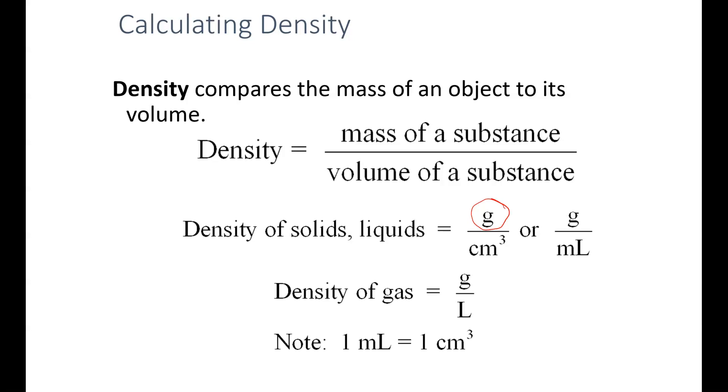The volume of the substance can be measured in cubic centimeters or milliliters if we're talking about a solid or a liquid. For gases, we typically use a volume of liters. As a reminder for why we can use cubic centimeters or milliliters for the density of solids and liquids, one milliliter is equal to exactly one cubic centimeter—it's the definition of a milliliter.